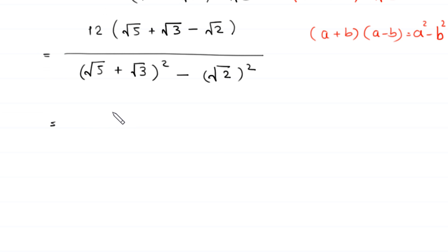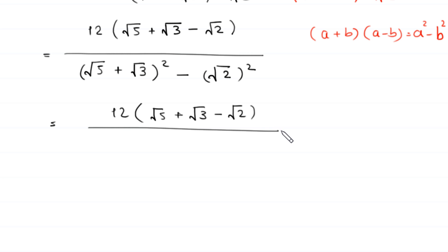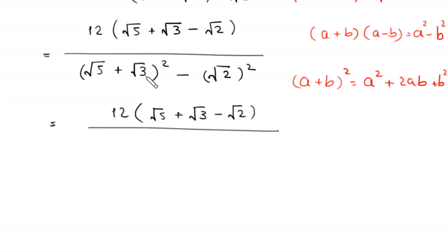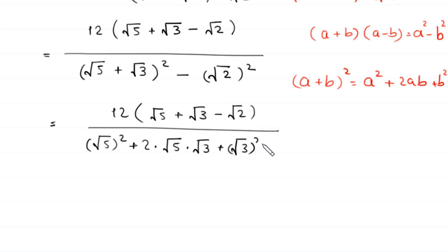Next, we have 12 times (root 5 plus root 3 minus root 2) divided by, using the algebraic identity (a plus b) whole squared equals a squared plus 2ab plus b squared. So root 5 plus root 3 whole squared becomes root 5 squared plus 2 times root 5 times root 3 plus root 3 squared.